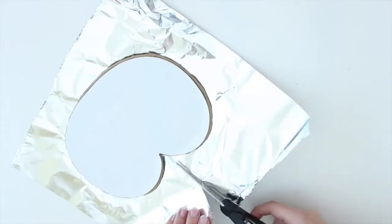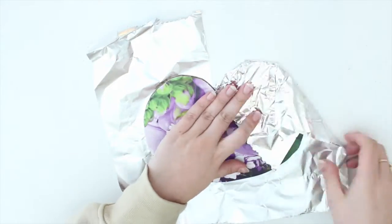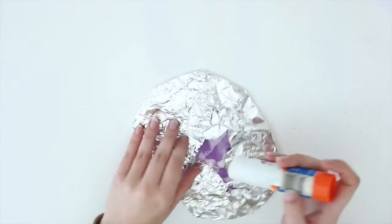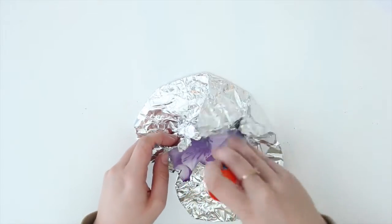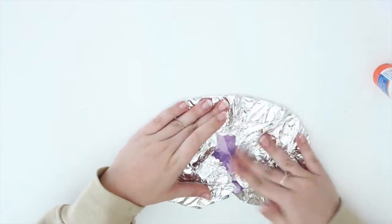Tin foil has two sides to it, so make sure you choose the side that you want. One is a little duller, one is a little more shiny. I made a snip right down the middle so that the tin foil would fit around the rounded edges really easily, and I just used a bit of glue to stick it down so it wouldn't move.